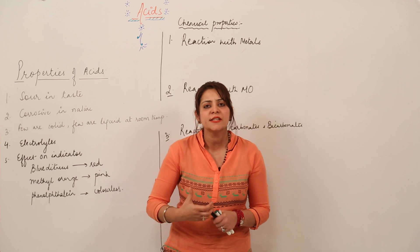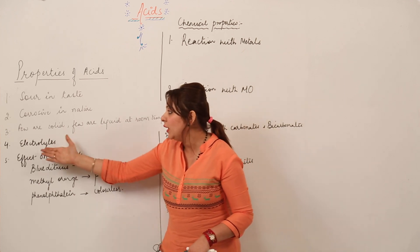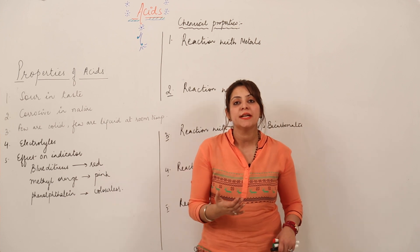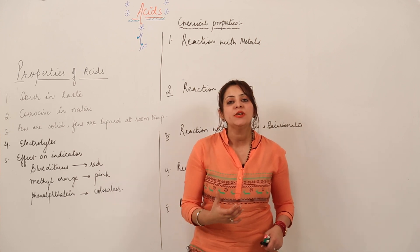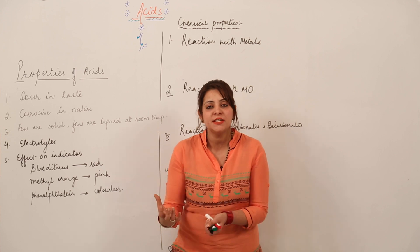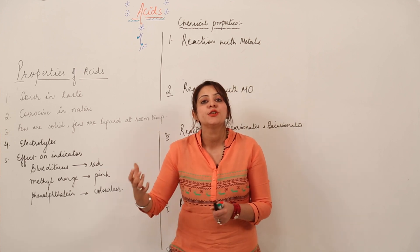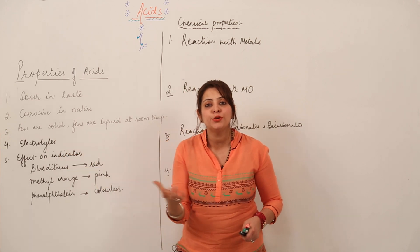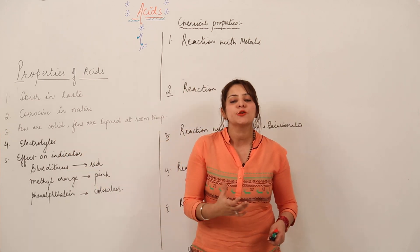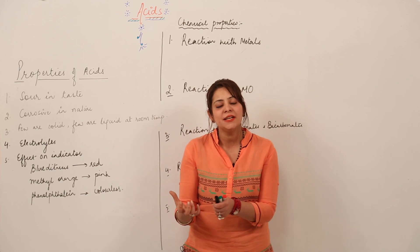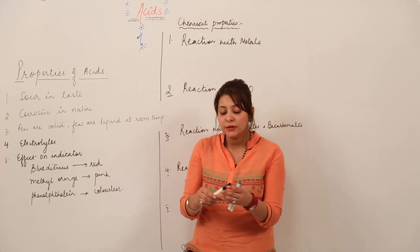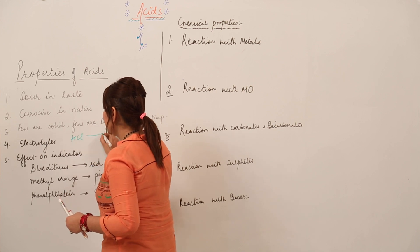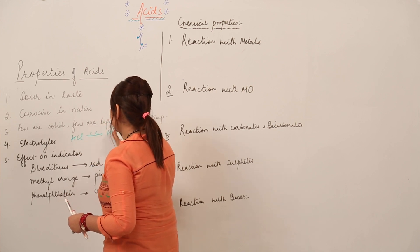Acids are mostly liquid at room temperature, but we have a few acids which exist as solids as well. Acids also act as electrolytes. An electrolyte is a substance through which, when electricity is passed, it gets dissociated into ions. So the aqueous solution of an acid is a good conductor of electricity. For example, when we pass electric current through hydrochloric acid, it gets dissociated into its respective ions.